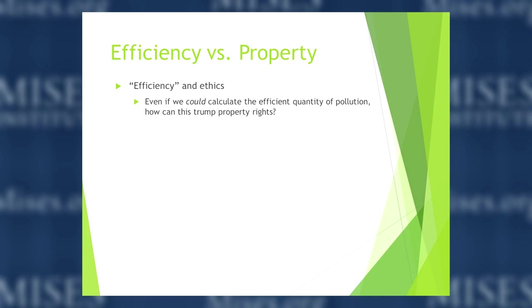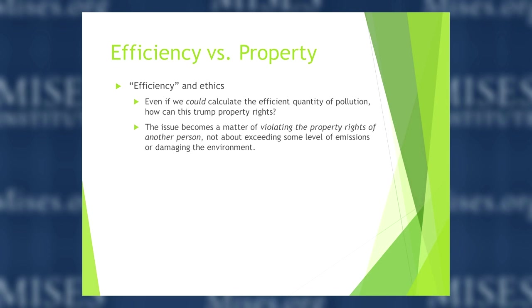Even if we could calculate the efficient quantity of pollution, how could this trump property rights? We have to think about this ethically as well as in terms of efficiency. The issue is a matter of violating the property rights of another person, not about exceeding some level of emissions or damaging the environment in the abstract. I'll refer to Murray Rothbard's classic work 'Law, Property Rights, and Air Pollution' from 1973. Rothbard does not shy away from discussing the ethical ramifications of these policies, and if there's one reading to support this lecture, it would be that one.